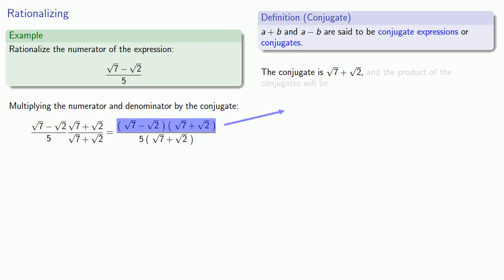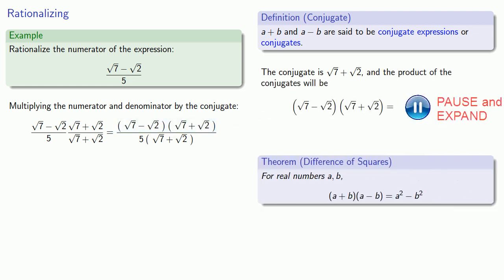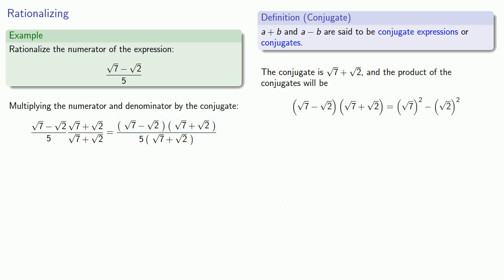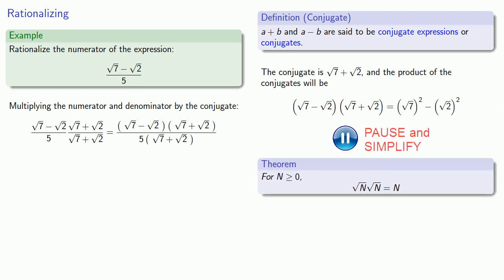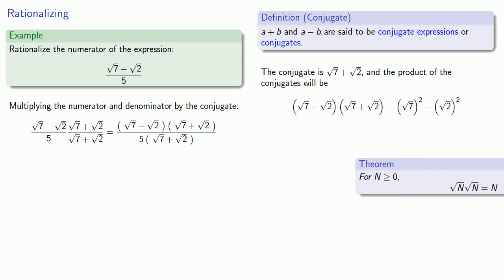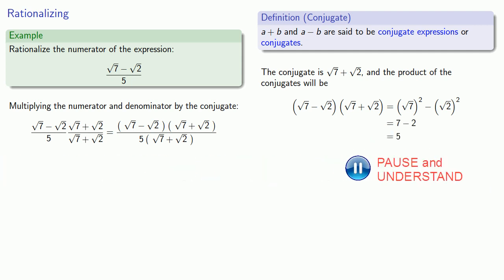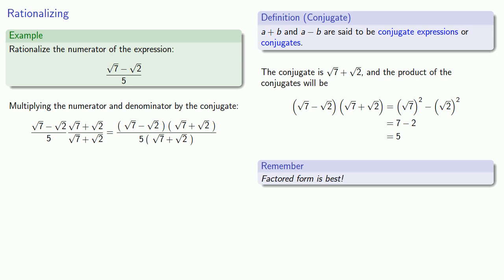Square root of 7 minus square root of 2 times square root of 7 plus square root of 2 is going to be square root of 7 squared minus square root of 2 squared, which we can simplify to 5. In the denominator — well, before we do anything, remember — factored form is best. We had to multiply out the numerator because we didn't want to have any square roots in it, but in the denominator we're already in factored form, so let's leave it in that form.